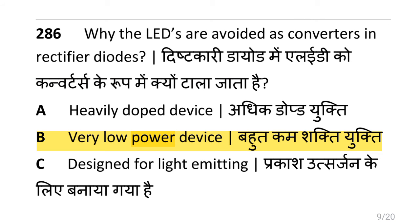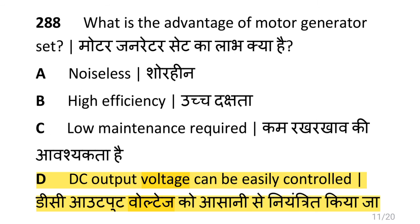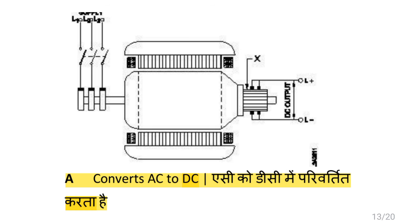Why the LEDs are avoided as converters in rectifier diodes? That is very low power device. Which is the main application of synchronous motor? That is power factor correction device. What is the advantage of motor generator set? That is DC output voltage can be easily controlled. What is the function of the part marked as a rotary converter? That is converts AC to DC.